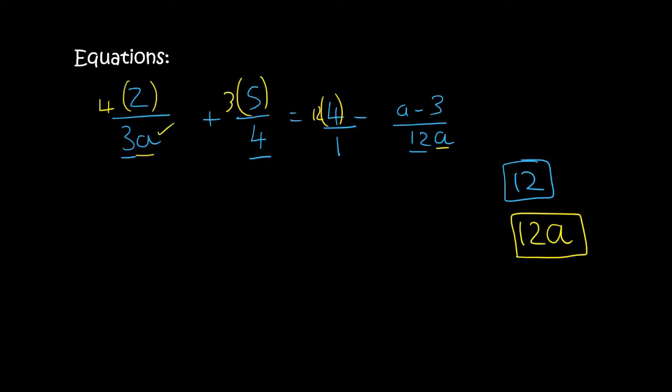So this one already has the a. This one doesn't. So instead of multiplying it by 3 only, multiply it by 3a. Because 3a times 4 does give you 12a, which is what your common denominator is. So this third one, you would multiply it by 12a.